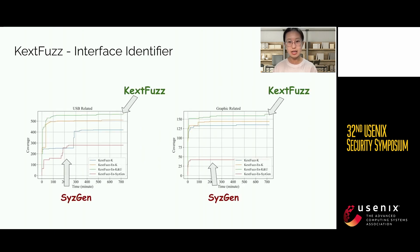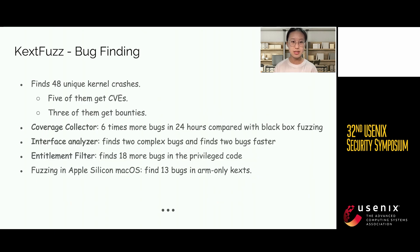The interface structures identified by KXTFuzz and the entitlement check bypass can significantly improve code coverage. The overall coverage reached by KXTFuzz also outperforms the state-of-the-art work. In the bug-finding part, KXTFuzz finds 48 bugs; five of them have been assigned CVEs, and three of them received bounties. KXTFuzz finds six times more crashes than a black-box baseline solution in 24 hours. The interface analyzer helps KXTFuzz find two complex bugs and find two additional bugs faster. The entitlement filter helps KXTFuzz find bugs nested in privileged code.